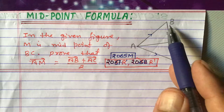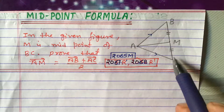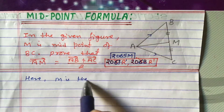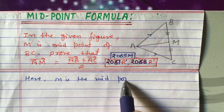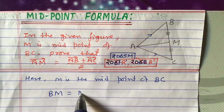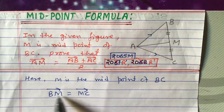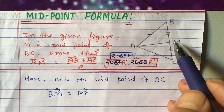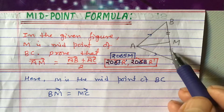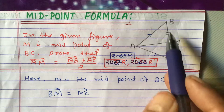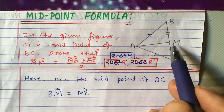It is given that BM equals MC because M is the midpoint of BC. So we can write vector BM equals vector MC. Remember, while writing this vector, they should be in the same direction — BM and MC are in the same direction. Do not write vector BM equal to vector CM, because BM and CM are in opposite directions, so that is incorrect.